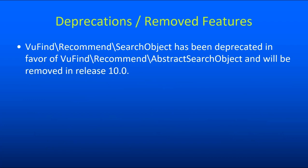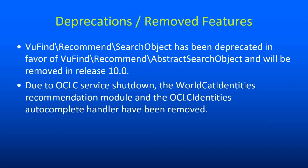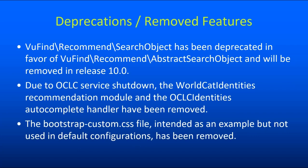Finally, some deprecations and removed features. The ViewFindRecommendSearchObject class has been deprecated in favor of ViewFindRecommendAbstractSearchObject. This has always been an abstract class — it just seemed clearer to include 'abstract' in the name for consistency. We added it in a backward compatible way in 9.1 and will finish that cleanup in 10.0. We also removed a few things because OCLC discontinued some services: the WorldCat Identities Recommendation module is gone, and the OCLC Identities Autocomplete Handler is also gone. If you use these in your configuration, they'll just be silently ignored. And a file called BootstrapCustom.css in one of our themes was deleted — it was basically an example of how you could override things with CSS, but was never used and was confusing people.